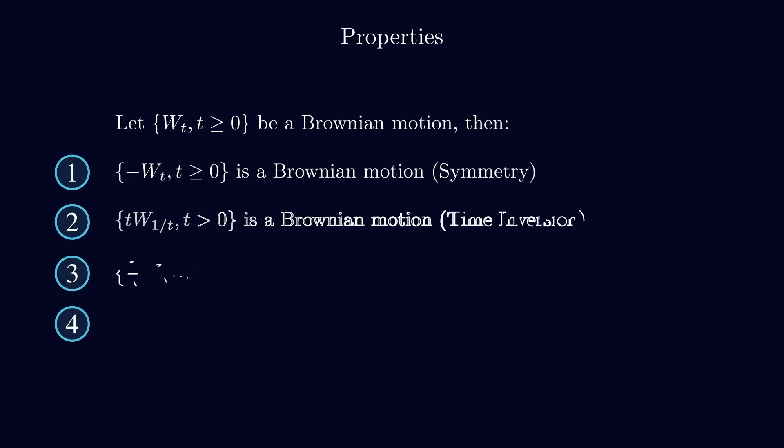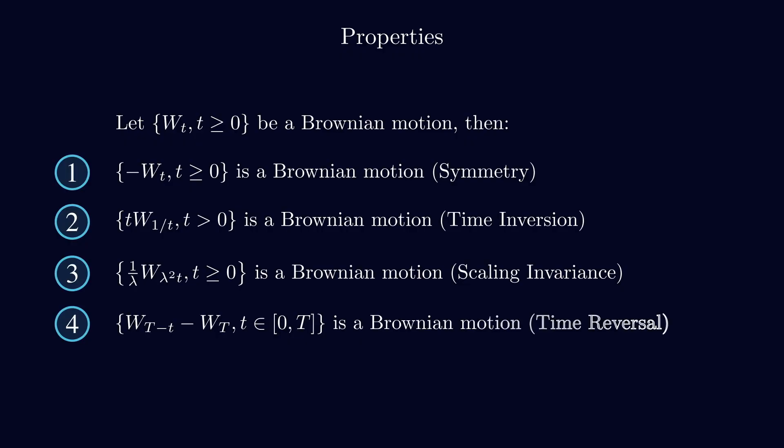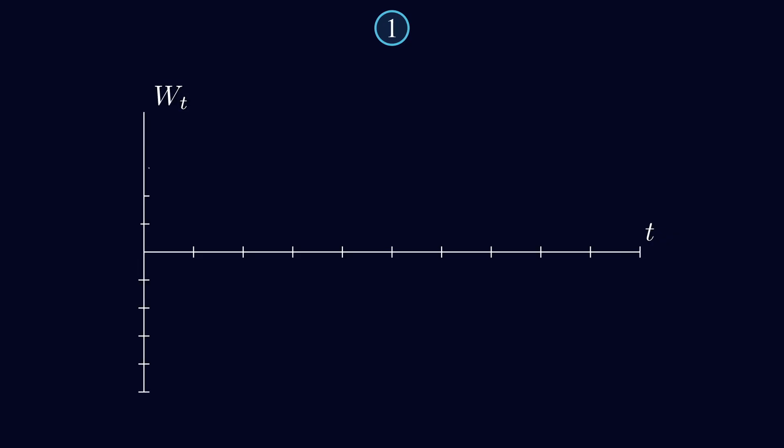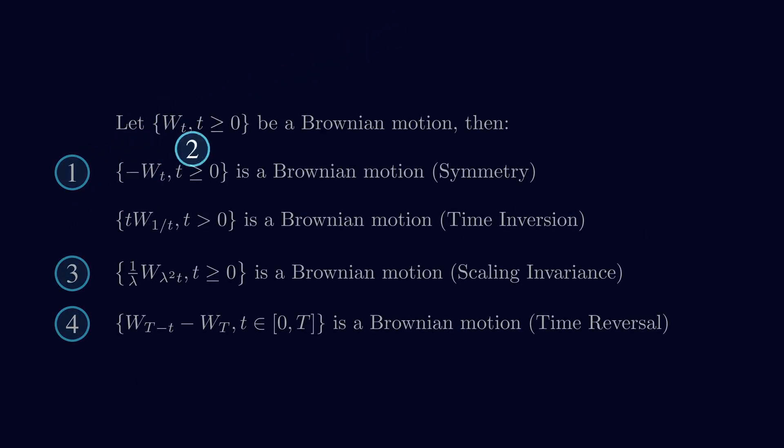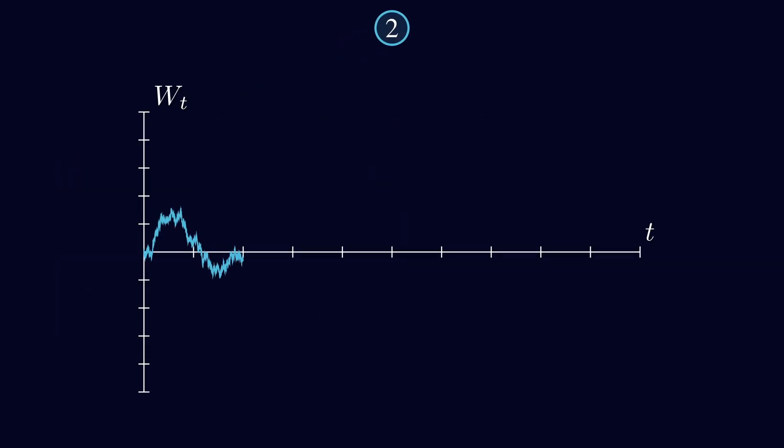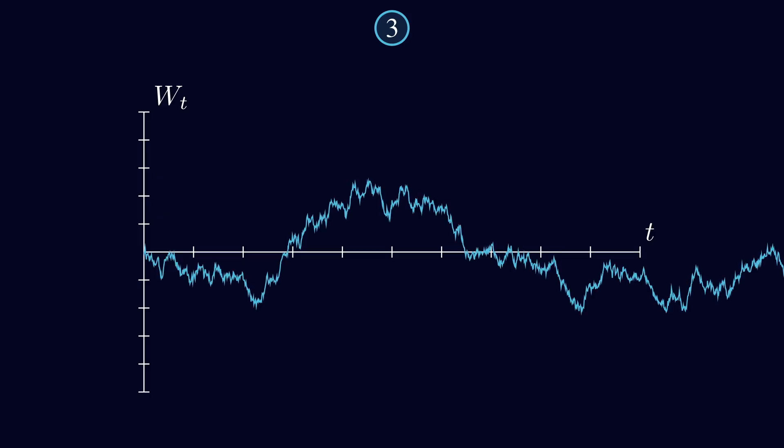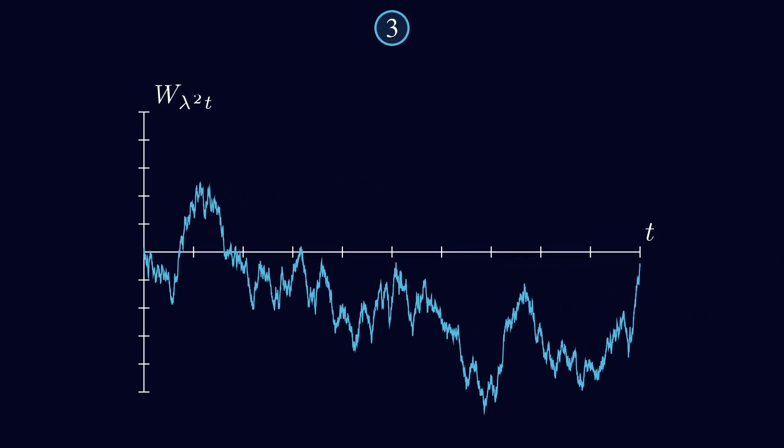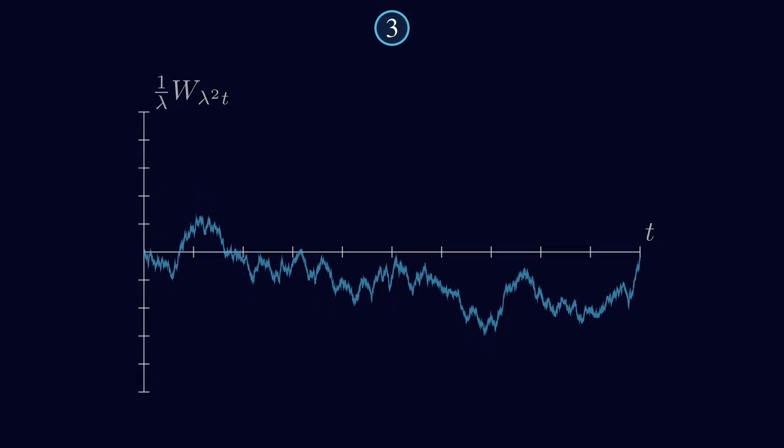Okay, so I just wanted to show you four properties of Brownian motion. The thing is that if you modify pure Brownian motion in a certain way, you can actually obtain another Brownian motion. So I'm not gonna prove it, but you can get some intuition by looking at those animations. So here you have the property of symmetry. Then you have time inversion. Then scaling invariance. And finally time reversal.